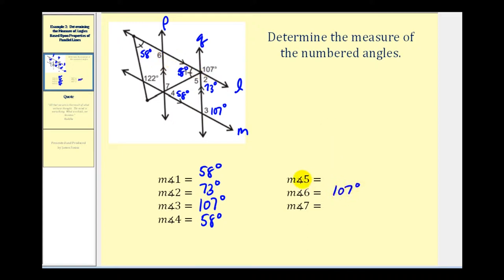That leaves angle five and angle seven. Angle five and angle seven are alternate interior angles where P and Q are the parallel lines and this segment is the transversal. So if we can find one of them, we also know the measure of the other.